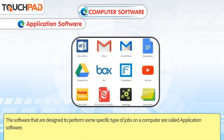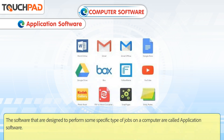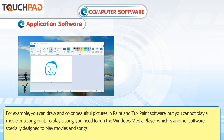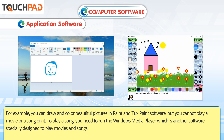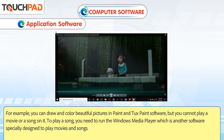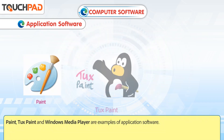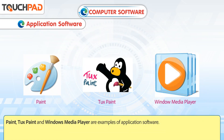Application software. The software that are designed to perform some specific type of jobs on a computer are called application software. For example, you can draw and color beautiful pictures in Paint and Tux Paint software, but you cannot play a movie or a song on it. To play a song, you need to run the Windows Media Player, which is another software specially designed to play movies and songs. Paint, Tux Paint and Windows Media Player are examples of application software.